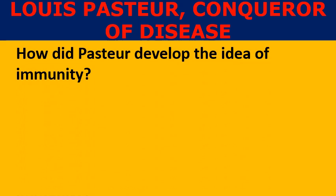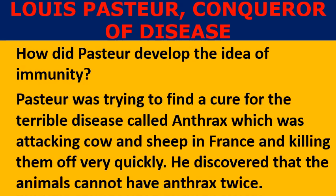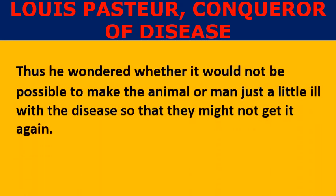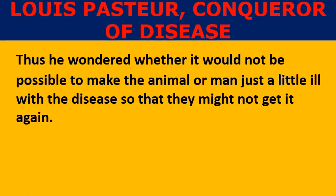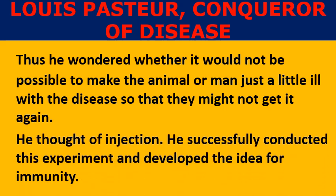How did Pasteur develop the idea of immunity? Pasteur was trying to find a cure for the terrible disease called anthrax, which was attacking cows and sheep in France and killing them very quickly. He discovered that animals cannot have anthrax twice. He wondered whether it would be possible to make an animal or man just a little ill with the disease so they might not get it again. He thought of injection, successfully conducted this experiment, and developed the idea of immunity.